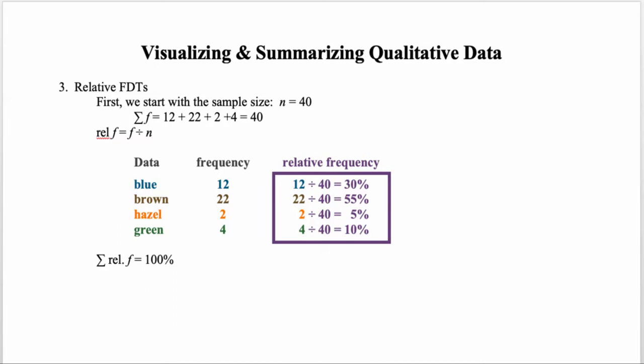Instead of reporting absolute frequencies, we report the relative frequency. To calculate the relative frequency, you take the frequency and divide by the total sample size. For example, you take 12 — the number of individuals with blue eyes — divide by 40, and get 30%.